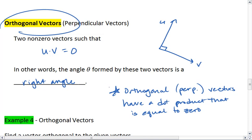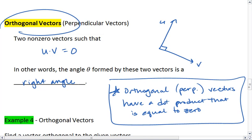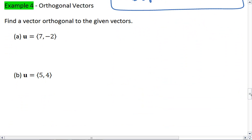We get a dot product that's going to be equal to zero. Alright, let's look at this. Our final example is example 4, where we're looking at orthogonal vectors.